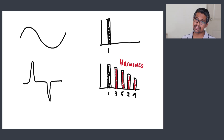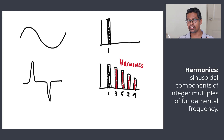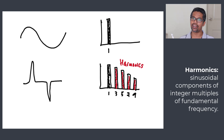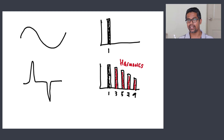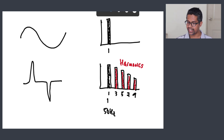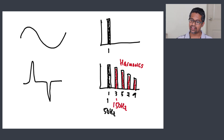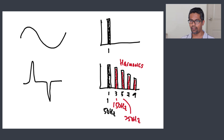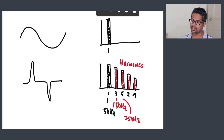So what is harmonics? Harmonics are sinusoidal components whose frequencies are integer multiples of the fundamental. In this particular case our fundamental is at 50 Hz, which means the 3rd harmonic is at 150 Hz and the 5th harmonic is at 250 Hz, and so forth.